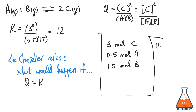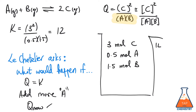But he goes further and says, what would happen if I were to add more A? Well, if I were to add more A, what I'm doing essentially is increasing the denominator in the expression for Q. And if I increase the denominator, my new value of Q is actually less than the value it was at equilibrium. That means I'm no longer at equilibrium, and what that means is that the amounts of products will increase and the amounts of reactants will decrease until such time as I get back to equilibrium.